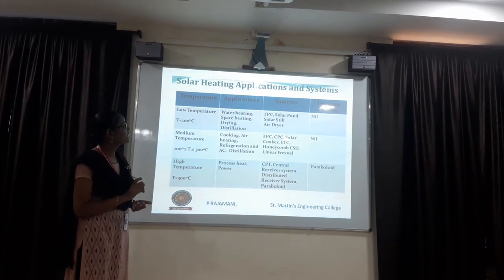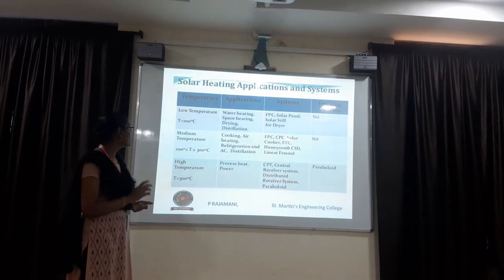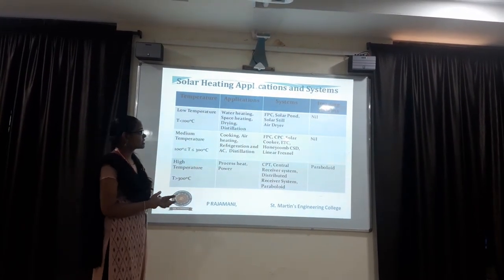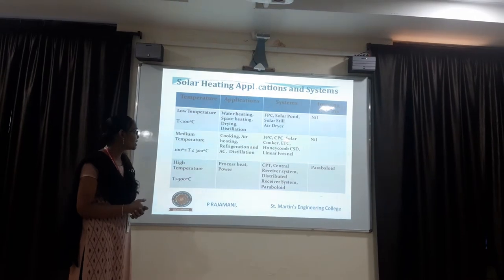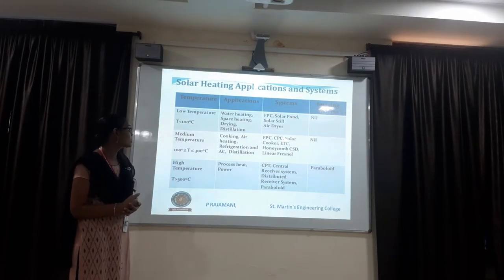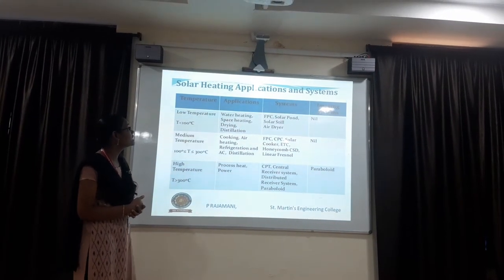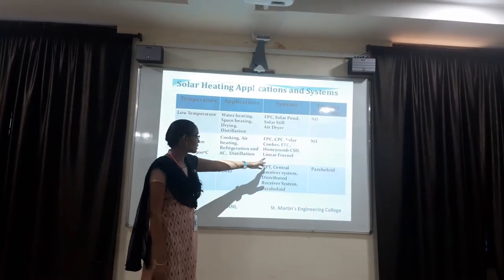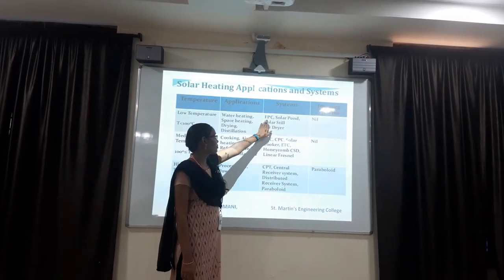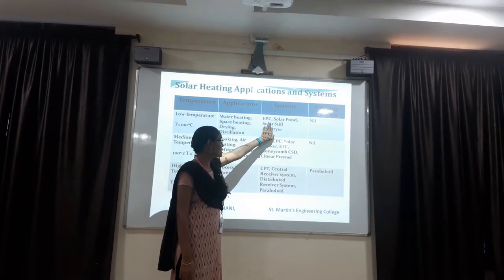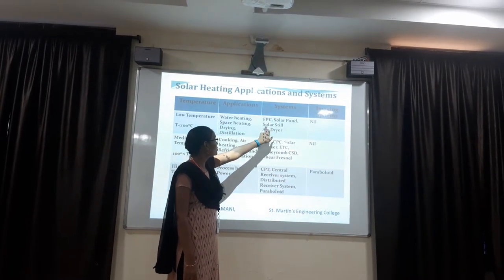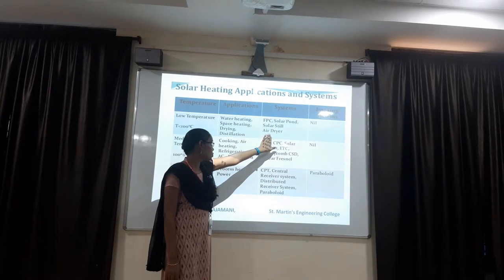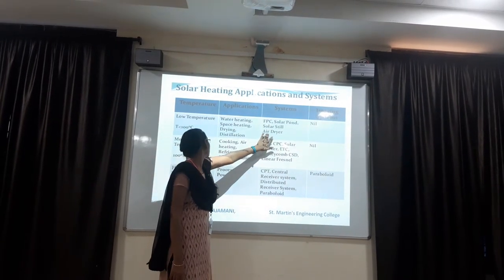Solar heating applications and systems - we have many types of systems with different applications and temperature ranges. The systems of solar thermal conversion include: flat plate collector system, solar pond, solar still, and air dryer. The temperature for these three systems is low - equal to or below 100 degrees - used for water heating, space heating, drying and distillation.